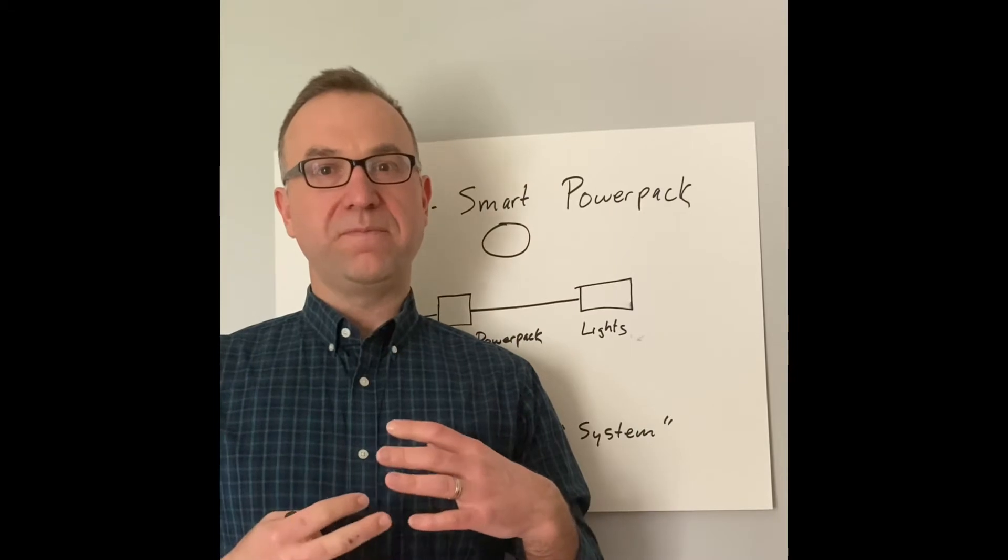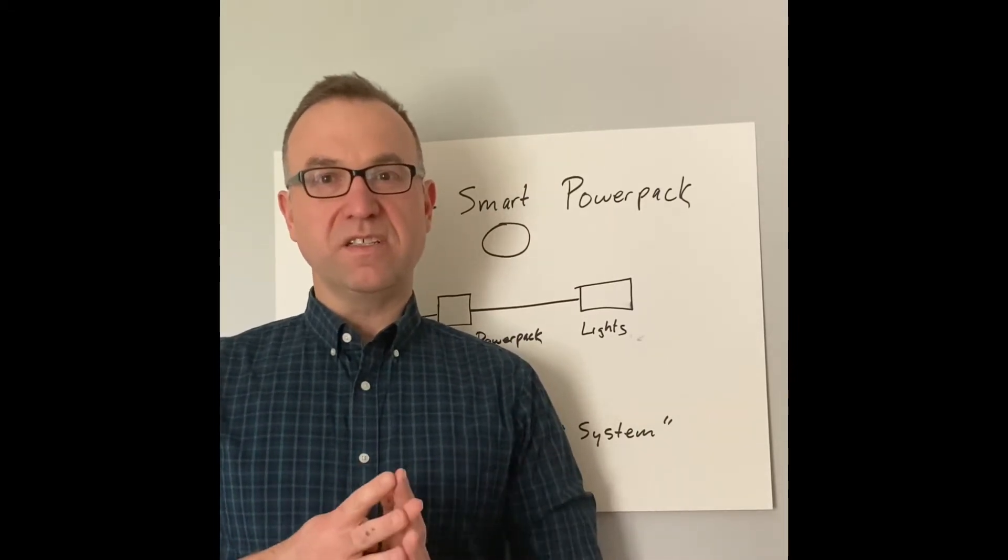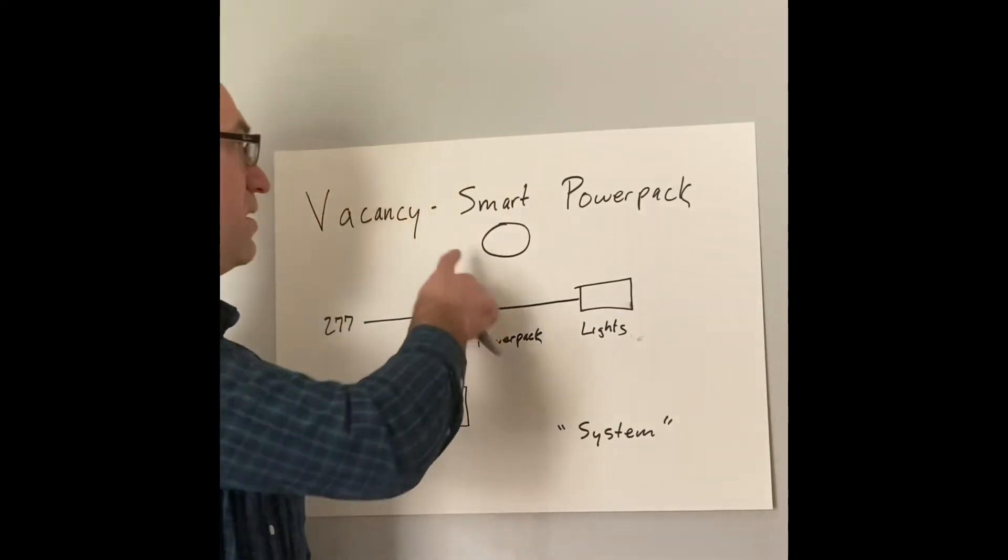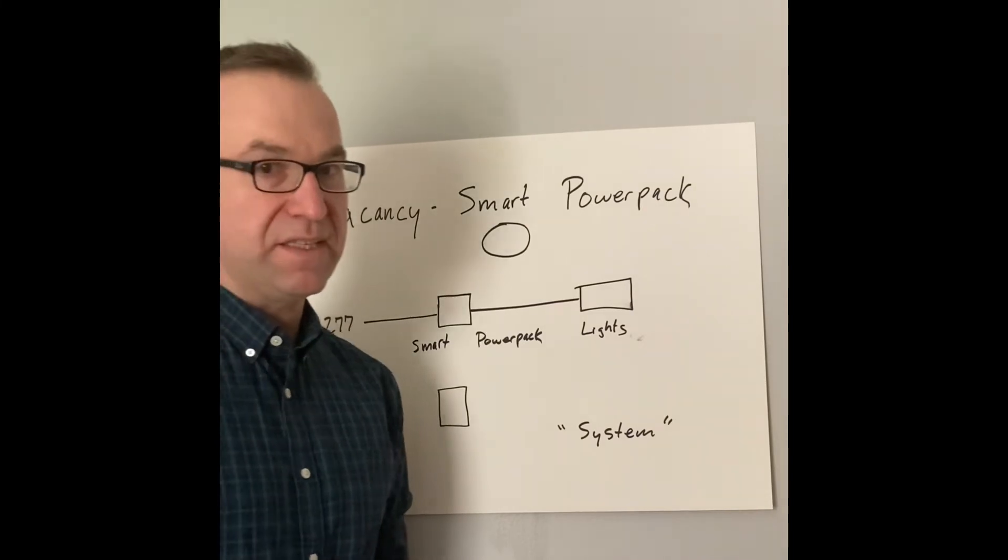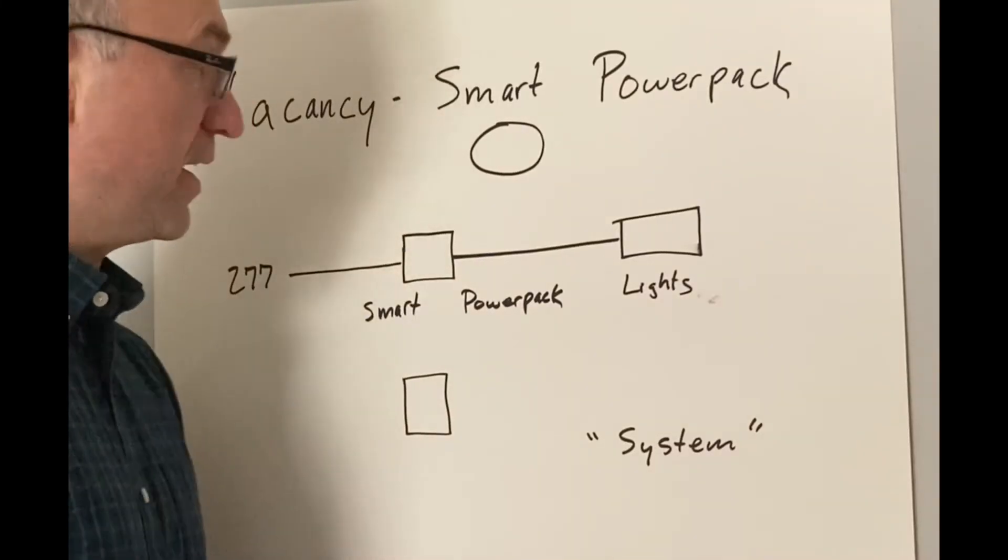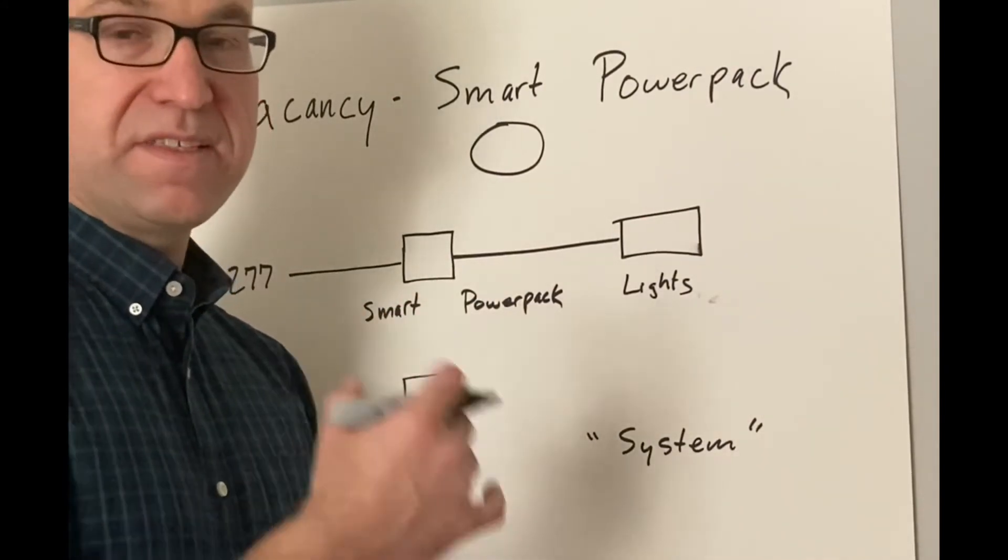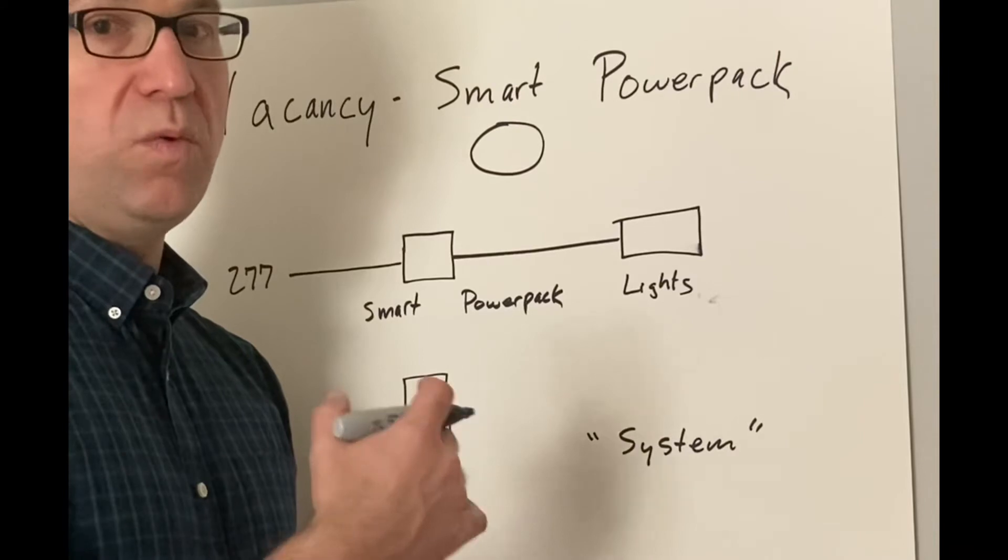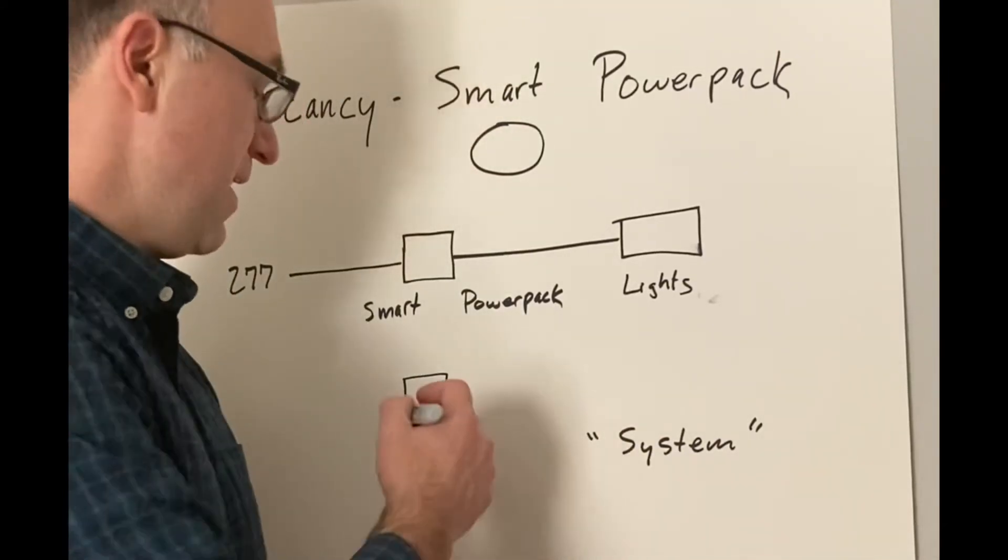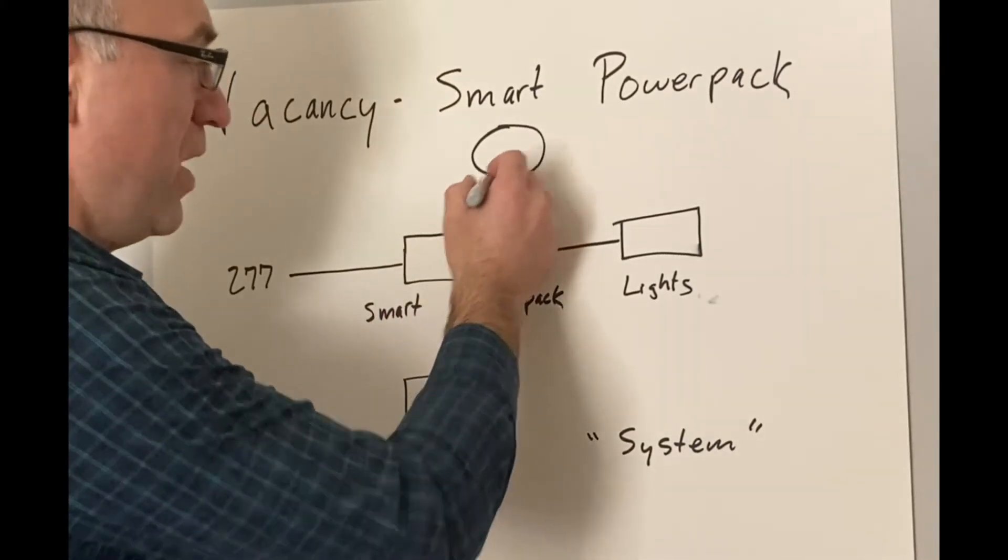All right. So if the momentary switch, if you have a more complicated installation, then what's next can be helpful is a smart power pack that we can use to accomplish the vacancy sensing. So again, we have our line voltage in to what I'm calling our smart power pack. I didn't connect the lines because we have a combination of systems that use wireless and wired communications. So I work with the Lutron equipment a lot. They have their Vive components, which are wireless.